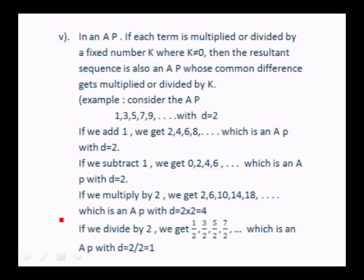If each term of an AP is multiplied or divided by a fixed non-zero number k, then the resultant sequence is also an AP whose common difference gets multiplied or divided by k. For example, multiplying 1, 3, 5, 7, 9 by 2 gives 2, 6, 10, 14, 18 — an AP with D = 2×2 = 4. Dividing by 2 gives 1/2, 3/2, 5/2, 7/2 — an AP with D = 2/2 = 1.